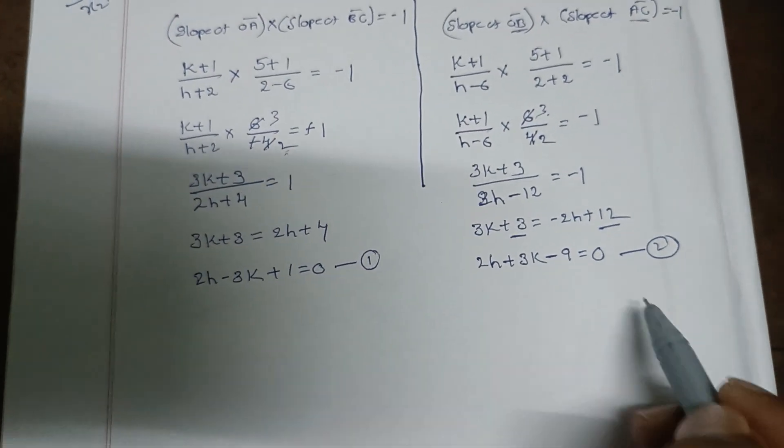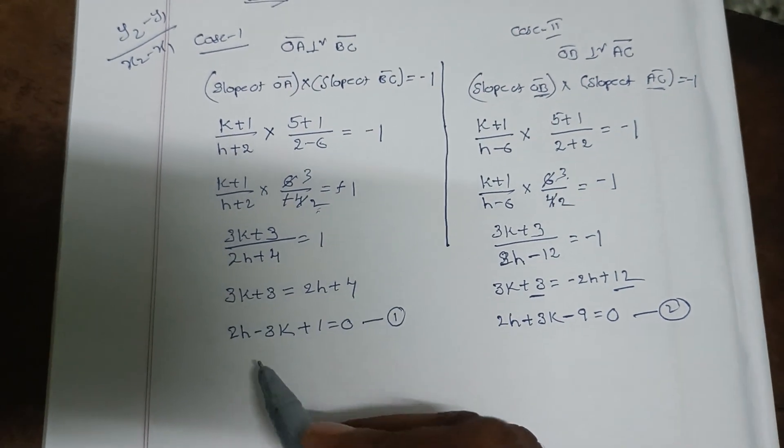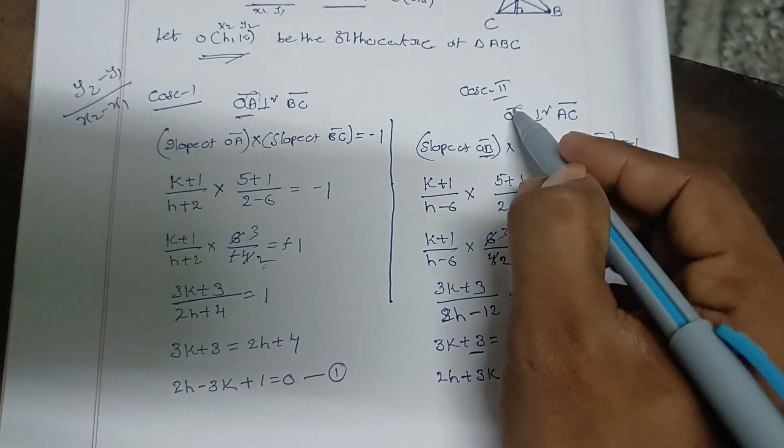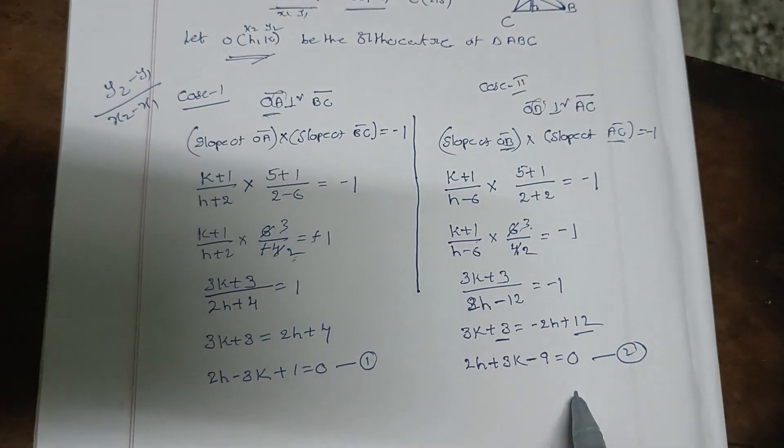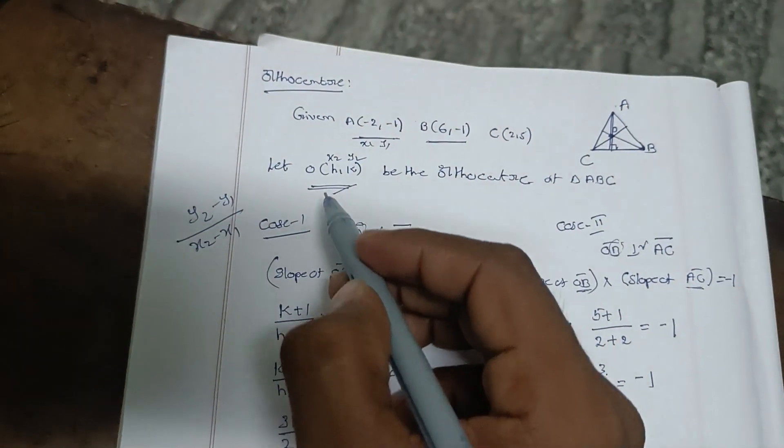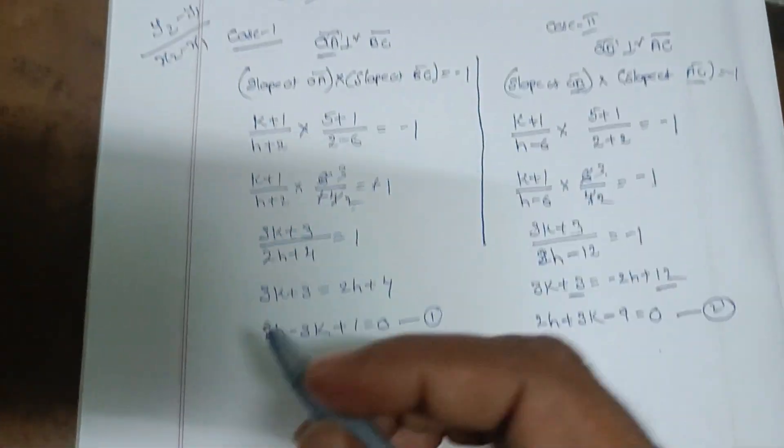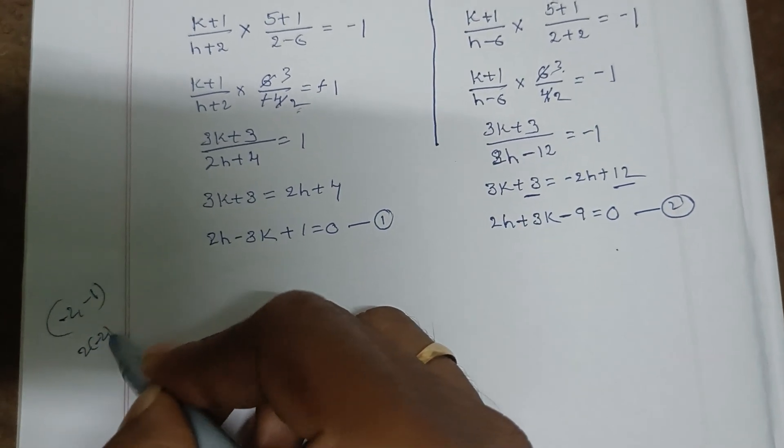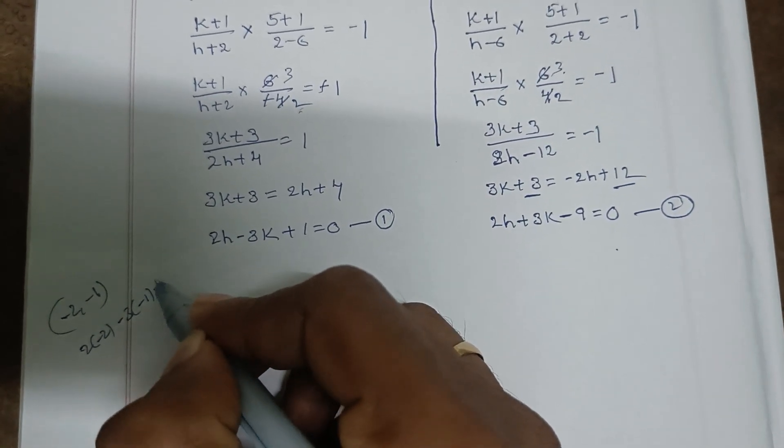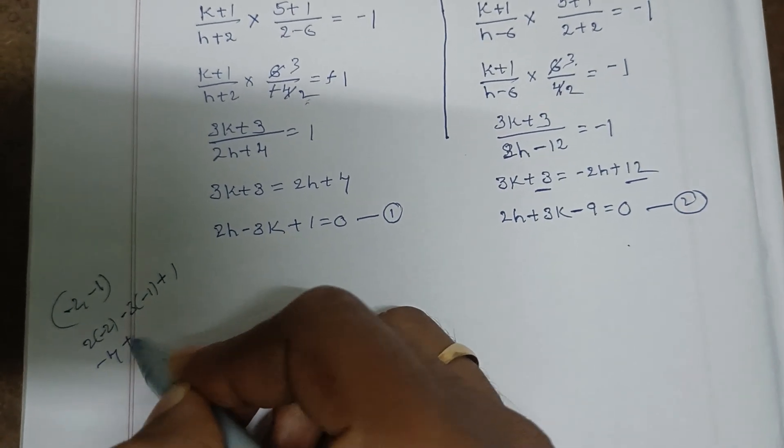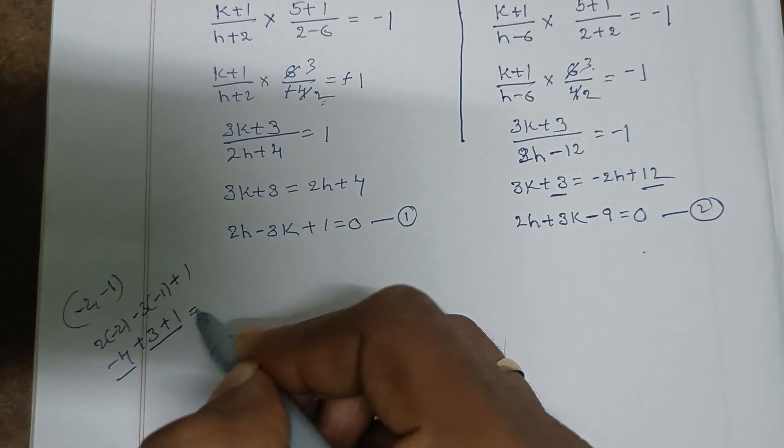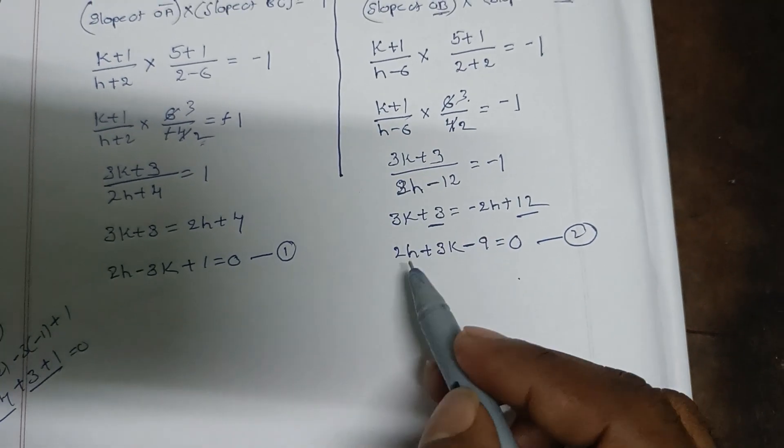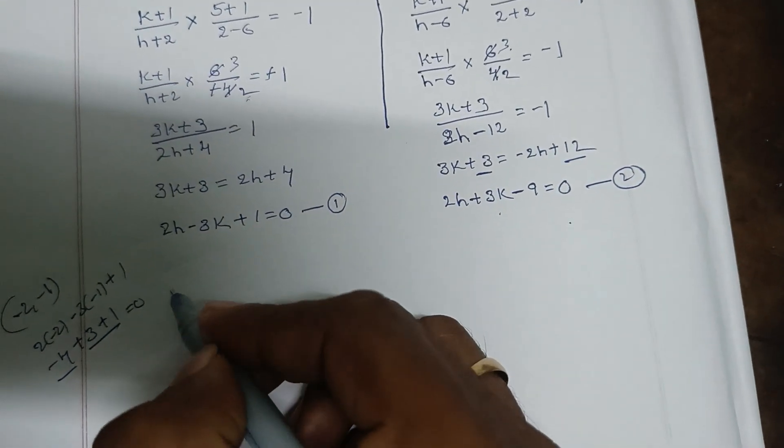We can verify these equations by substituting the point O(h,k). If O lies on the altitude from A perpendicular to BC, and on the altitude from B perpendicular to AC, then both equations should be satisfied.